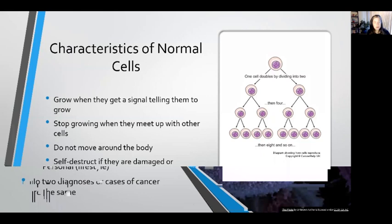Normal cells also stop growing when they meet up with other cells or when they get a signal from our body telling them it's time to stop growing. Normal cells do not move around the body — our heart cells stay in our heart, our lung cells stay in our lung, our brain cells stay in our brain. And normal cells know to self-destruct if they become damaged or abnormal in some way. This is called apoptosis.